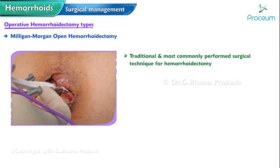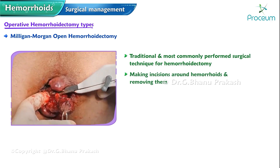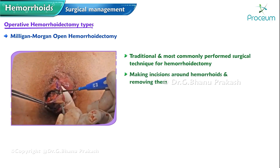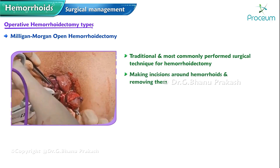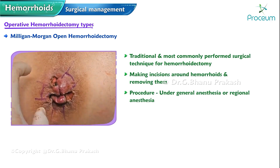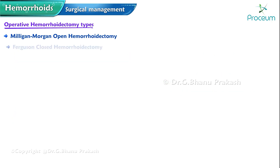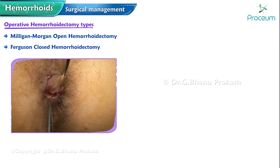The Milligan-Morgan open hemorrhoidectomy is the traditional and most commonly performed technique. It involves making incisions around the hemorrhoids and removing them under general or regional anesthesia. After removal, the surgical site is left open to heal by secondary intention.